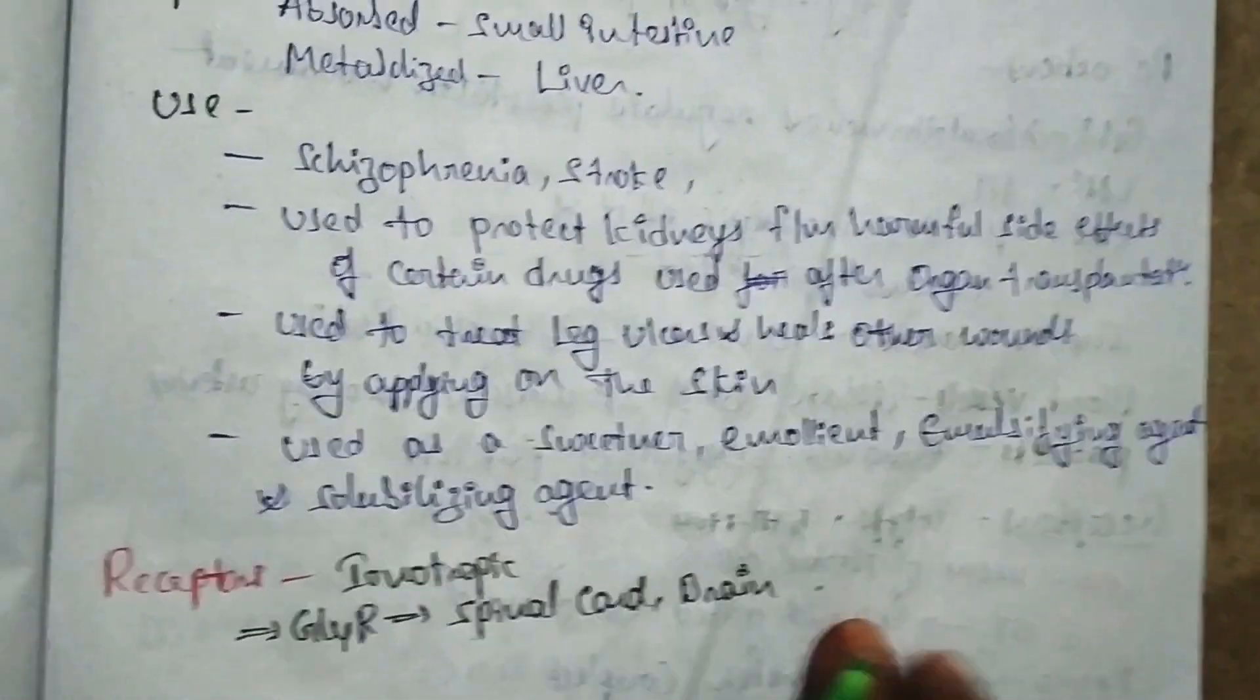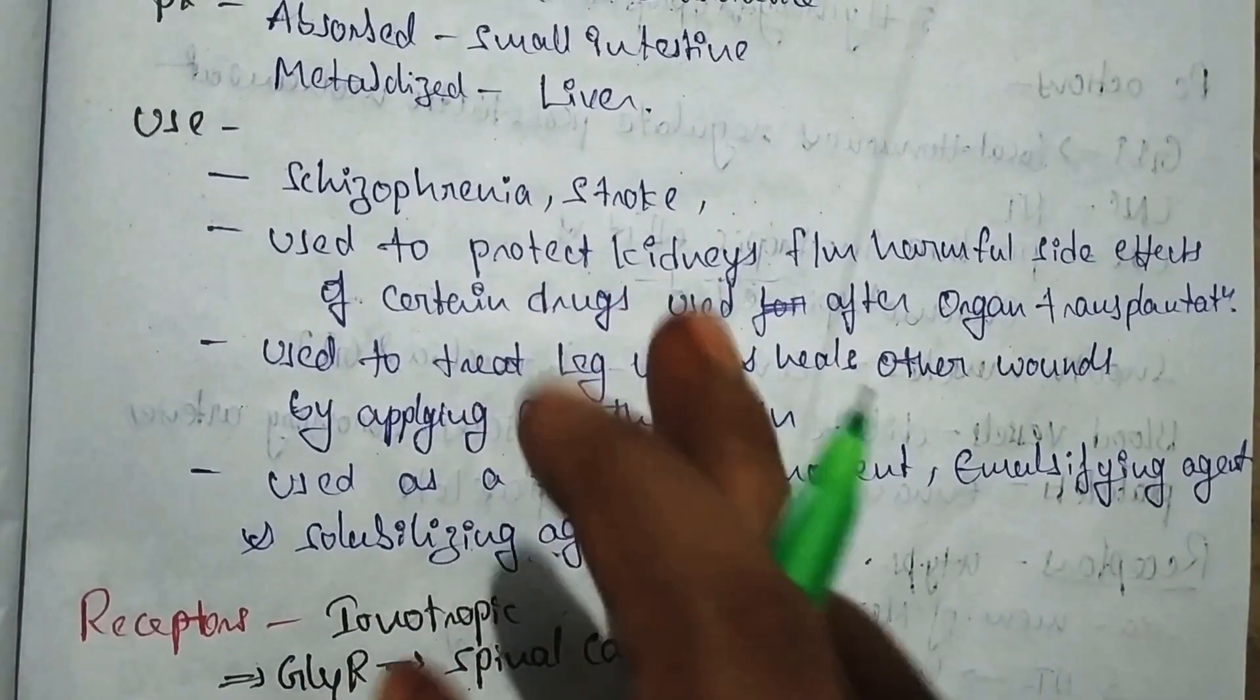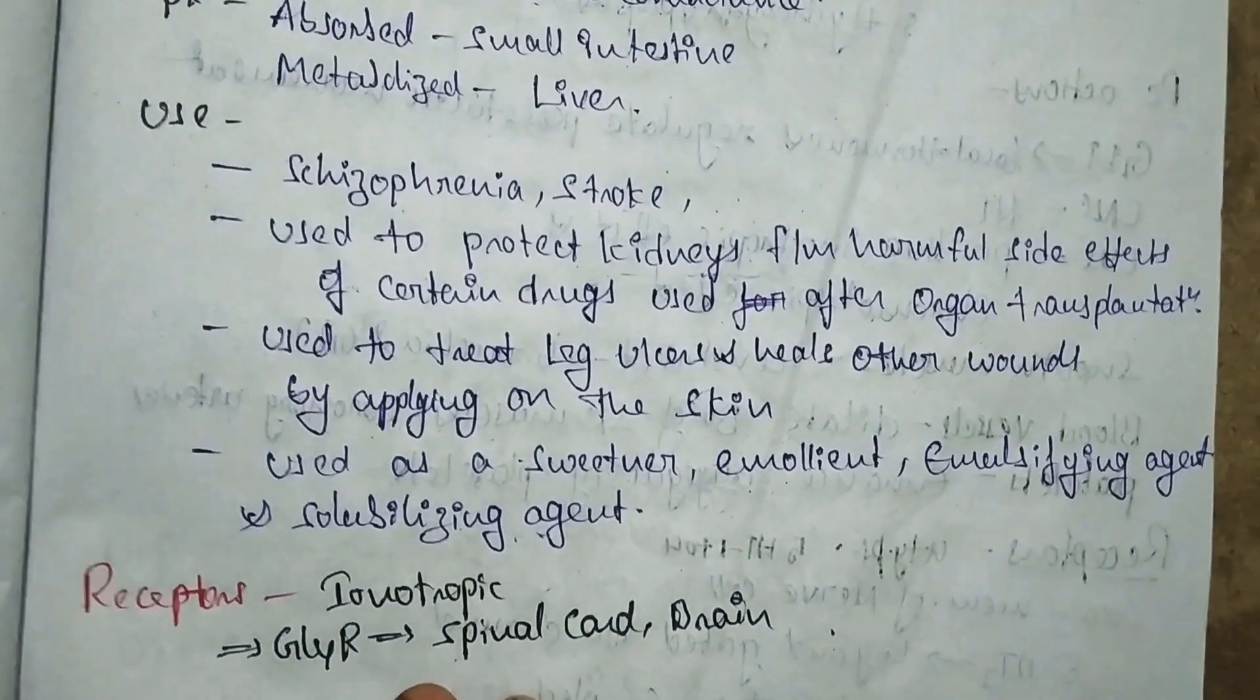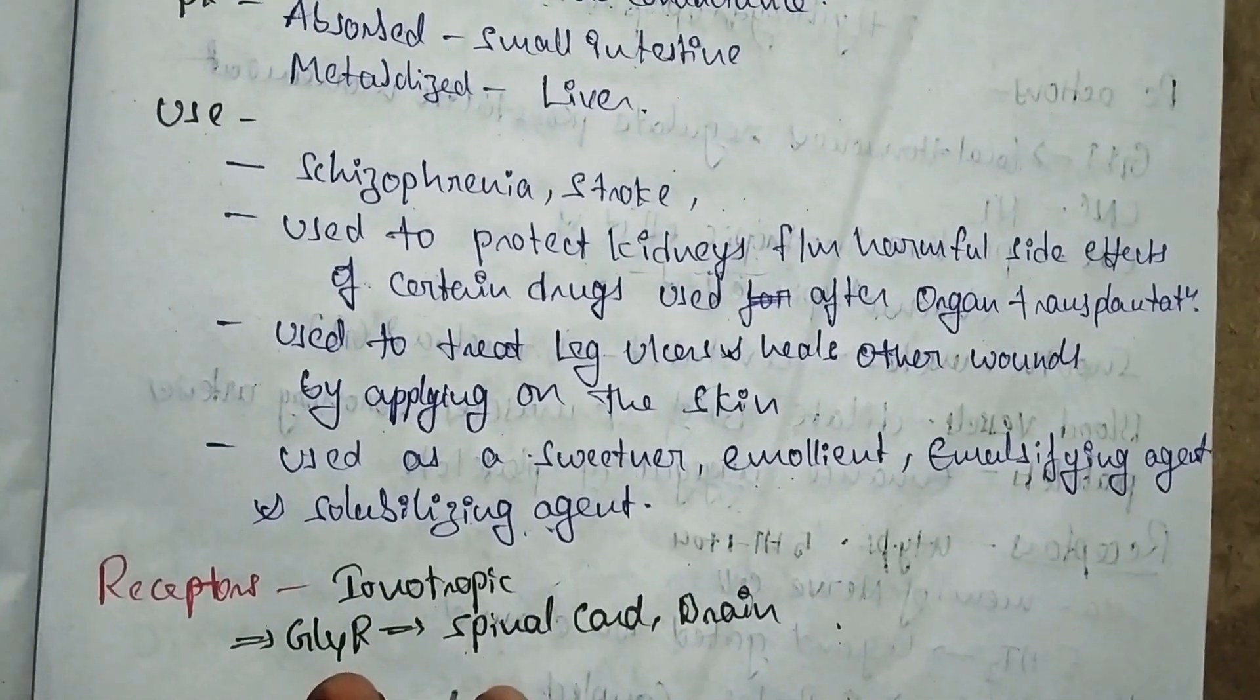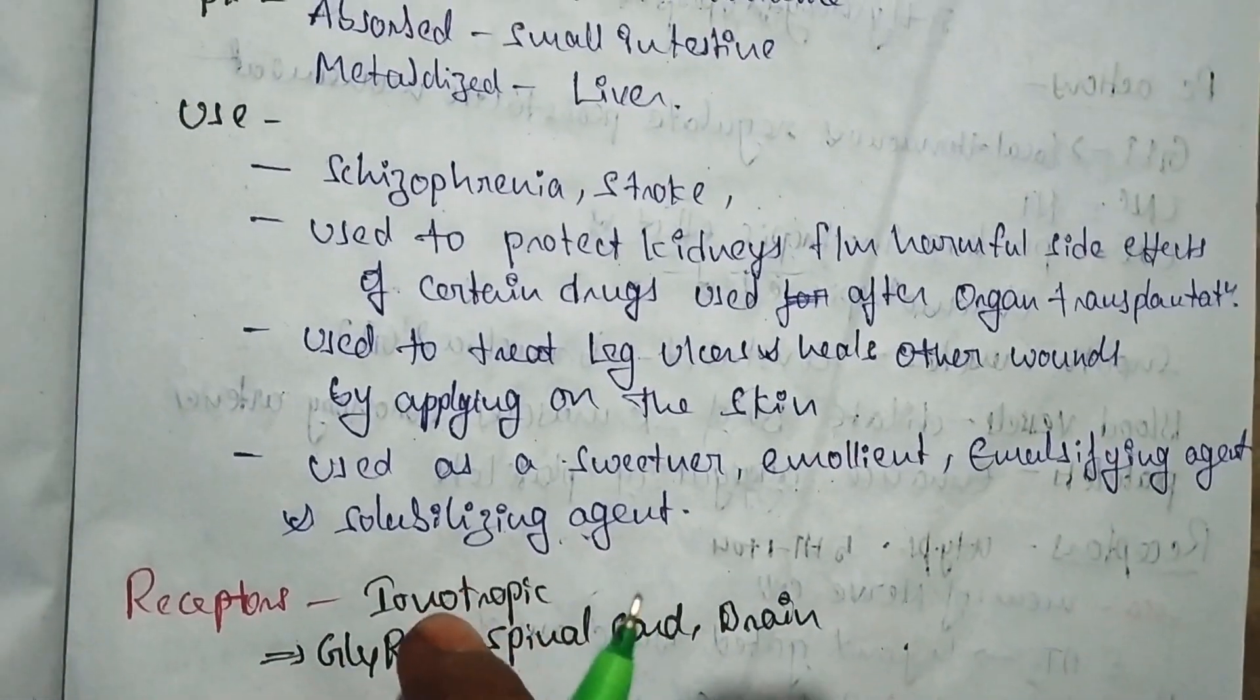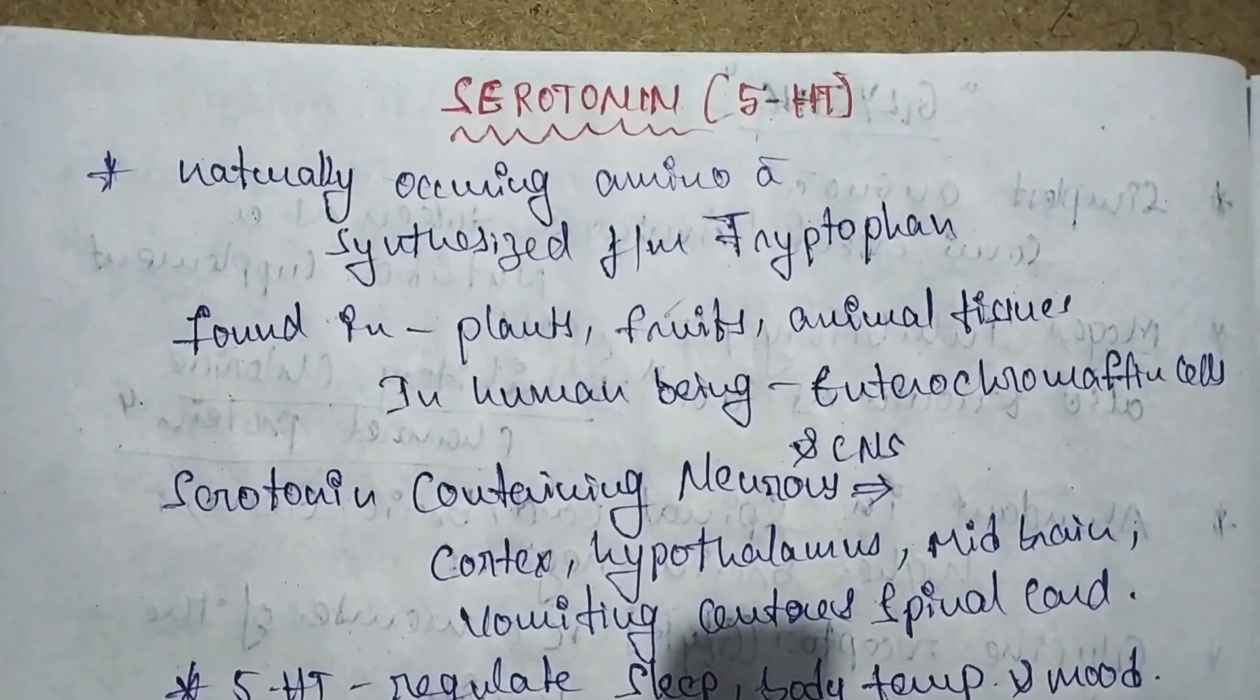The receptors are ionotropic receptors. Chloride conductance increases at the receptor junction. Glycinergic receptors are available at the spinal cord and brain. This is about the glycine neurotransmitter.